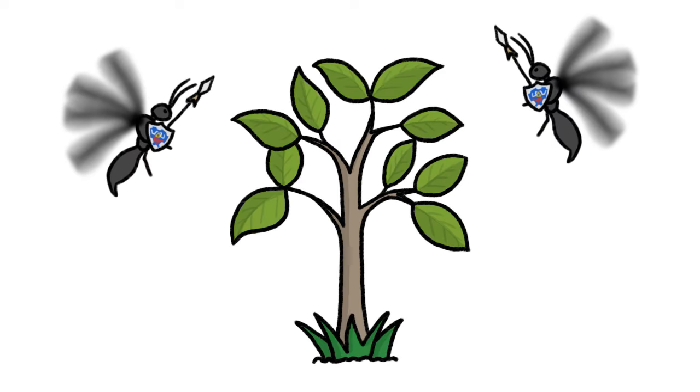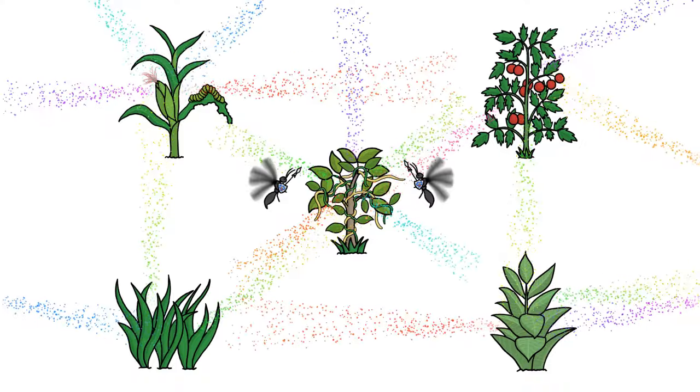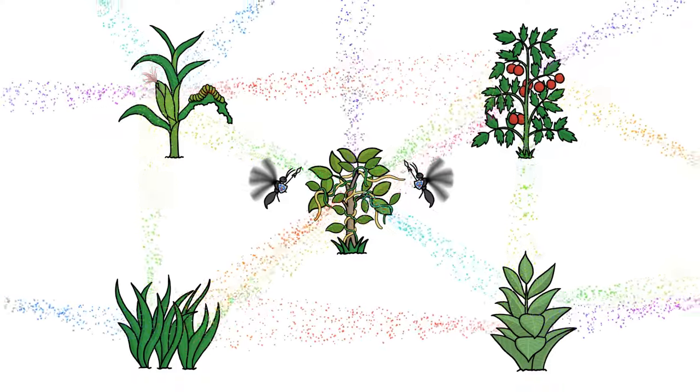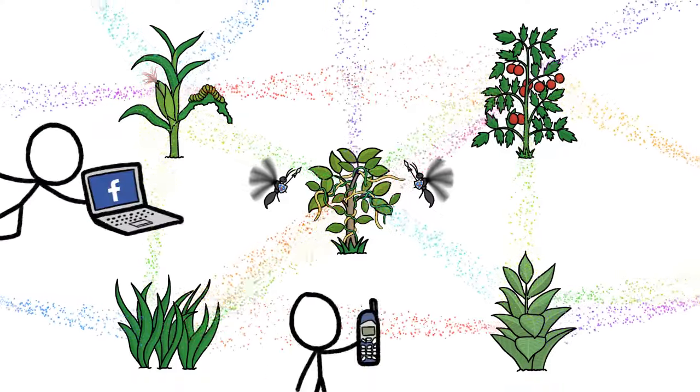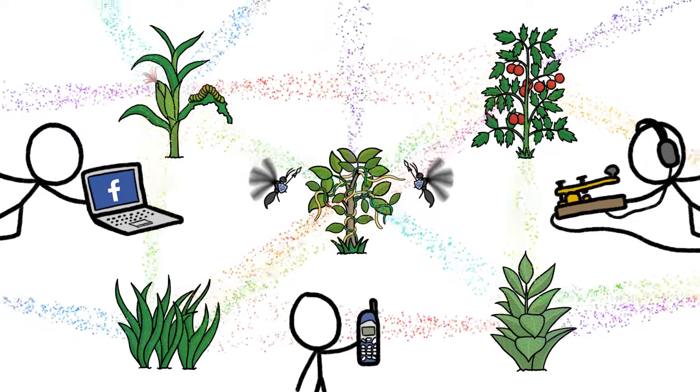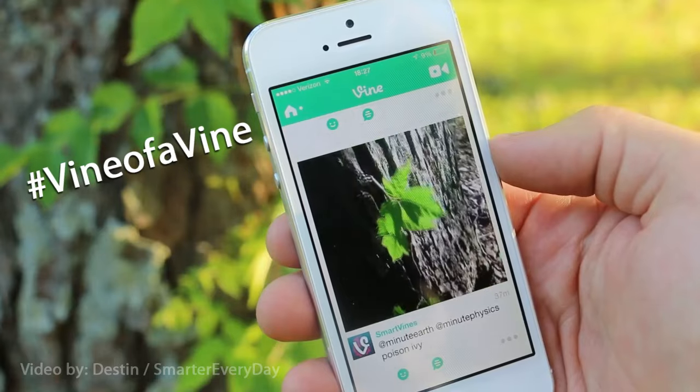Whatever the purpose, self-defense, parasitism or mimicry, plants have been chatting and eavesdropping in complex social networks since long before Facebook, texting, or even language. If anything, we took a leaf from their book.